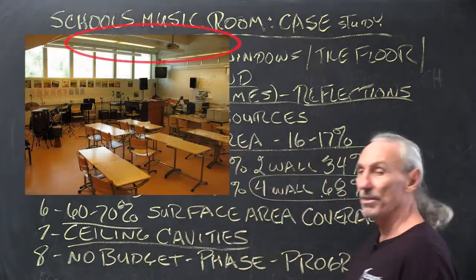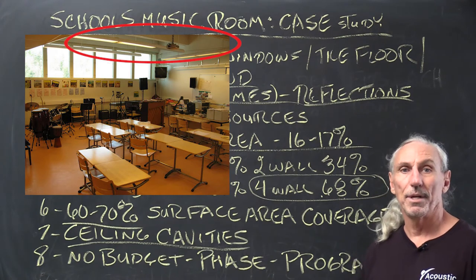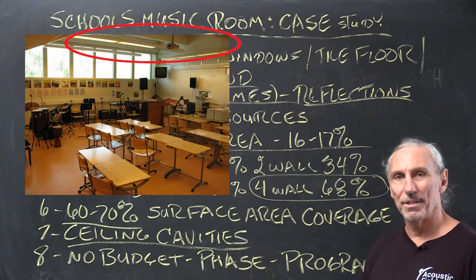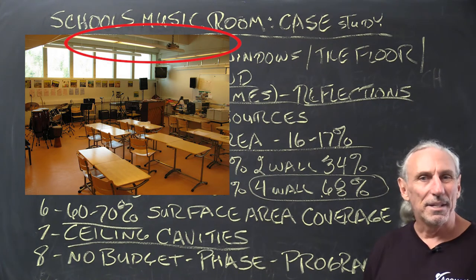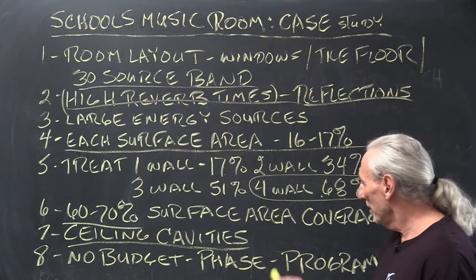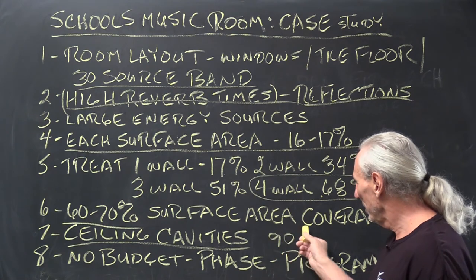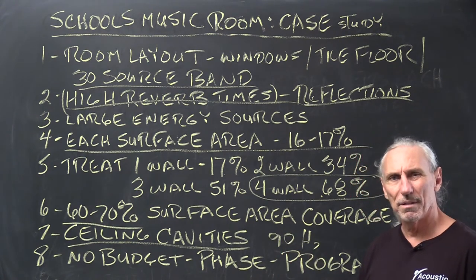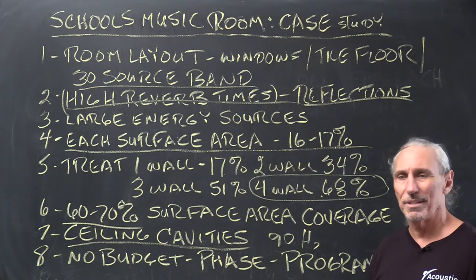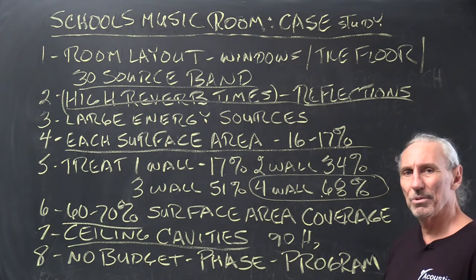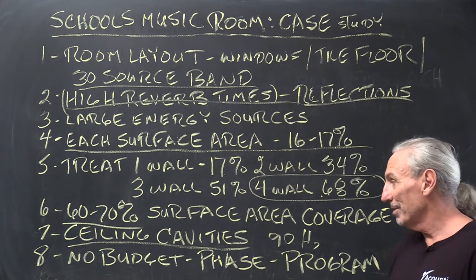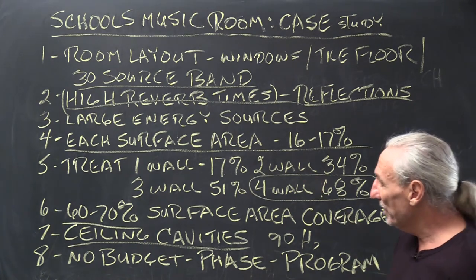Look at the ceiling cavities in the photo — I don't know why the ceiling was designed like that; what a waste of money. You have cavities that are about four feet by 18 inches deep, and they produce resonances. Run the numbers and you've got a cavity producing around 90 cycles of energy resonating, so the whole ceiling is producing resonances. To treat it you'd have to line everything inside each cavity with treatment material, and in a small room that's just not cost effective.